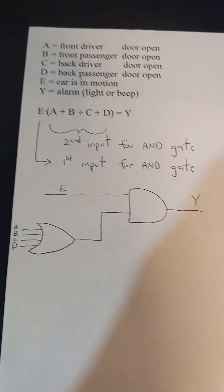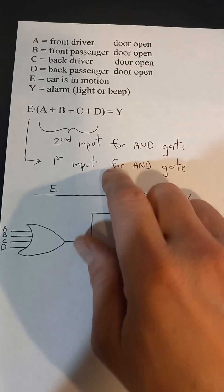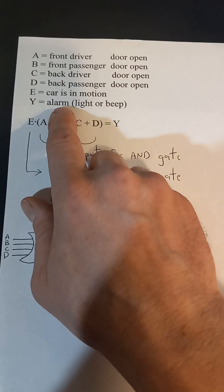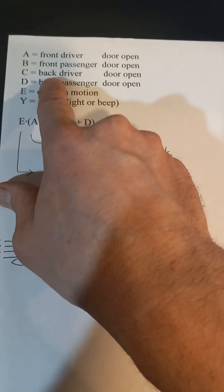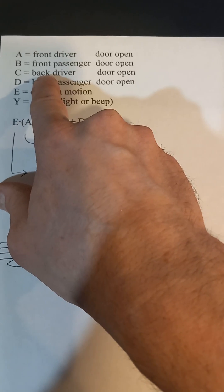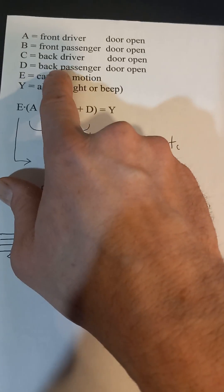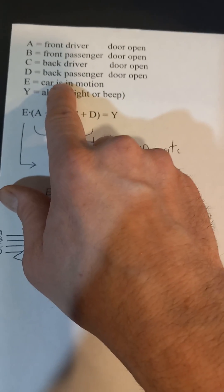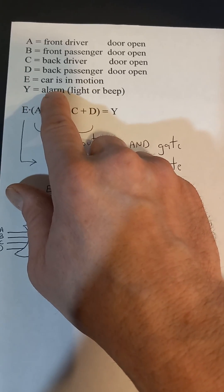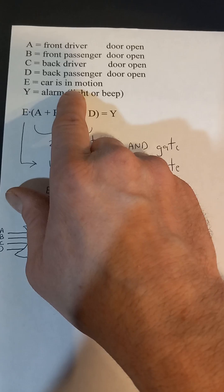And here, I made this one up. So, basically, you have five inputs. You can make A your front driver's side, B your front passenger side, C your back door driver's side, and D your back passenger door, and E your car's in motion.